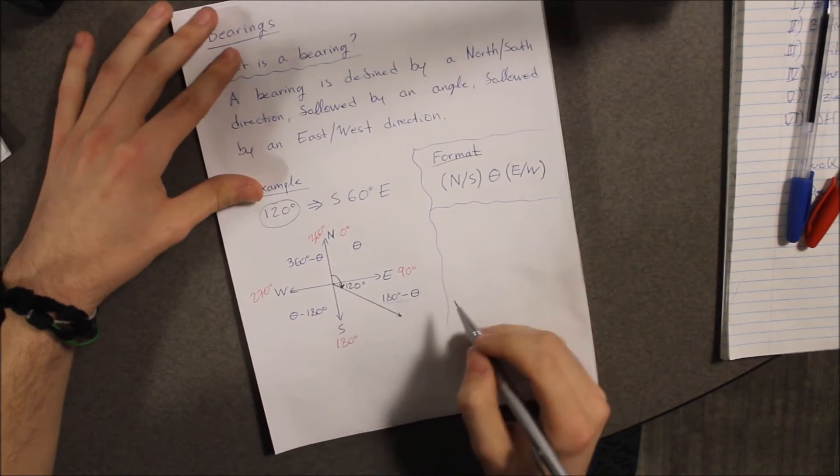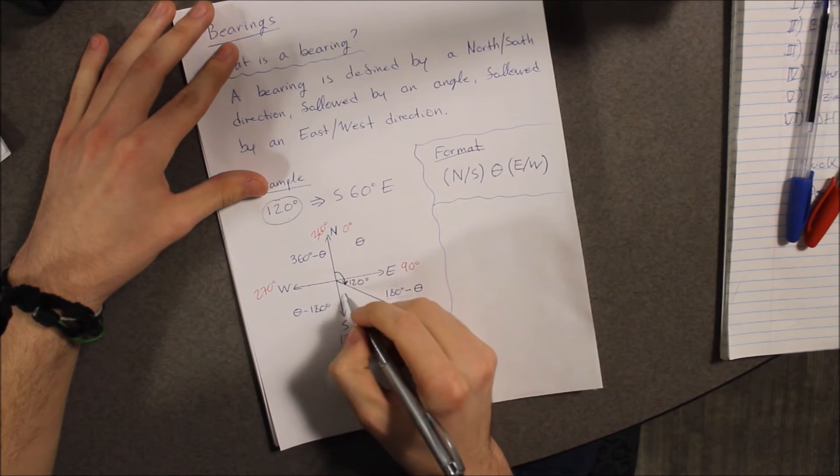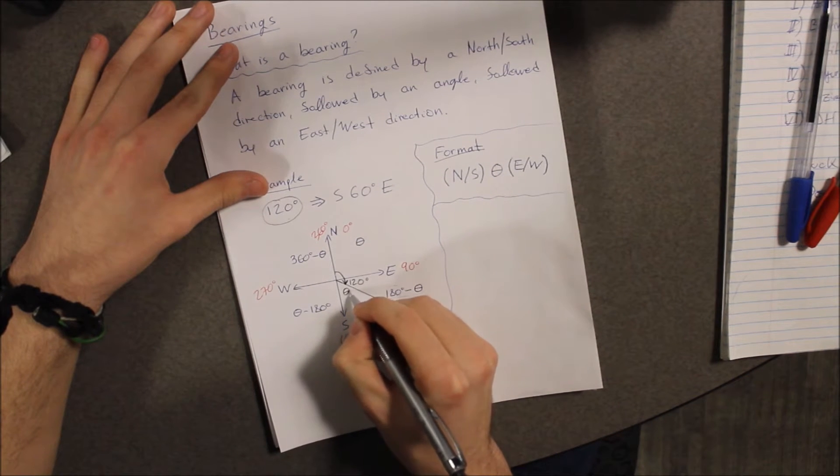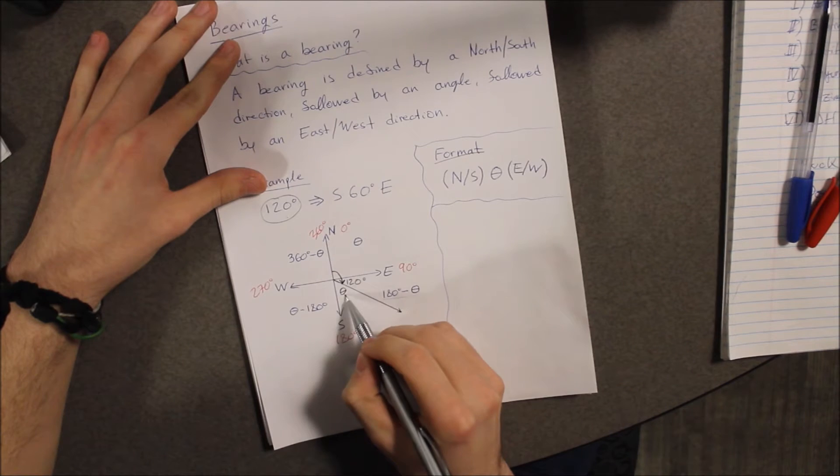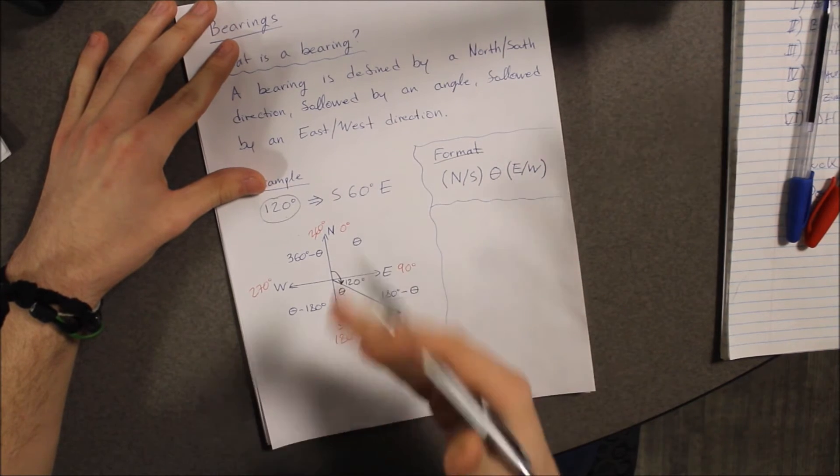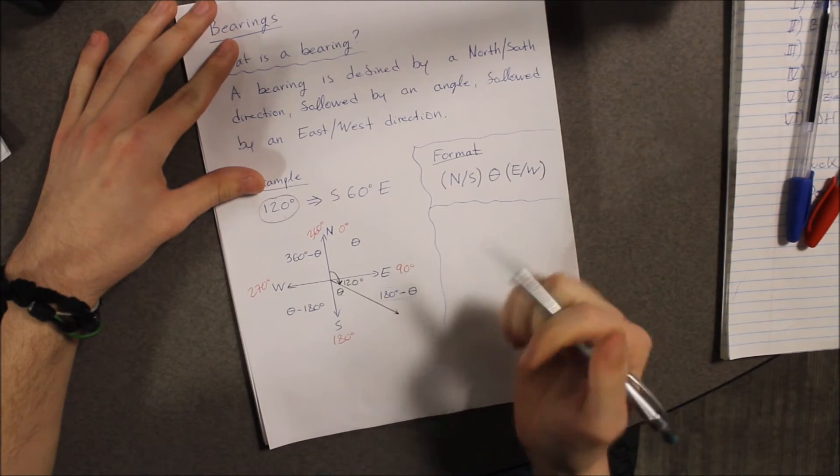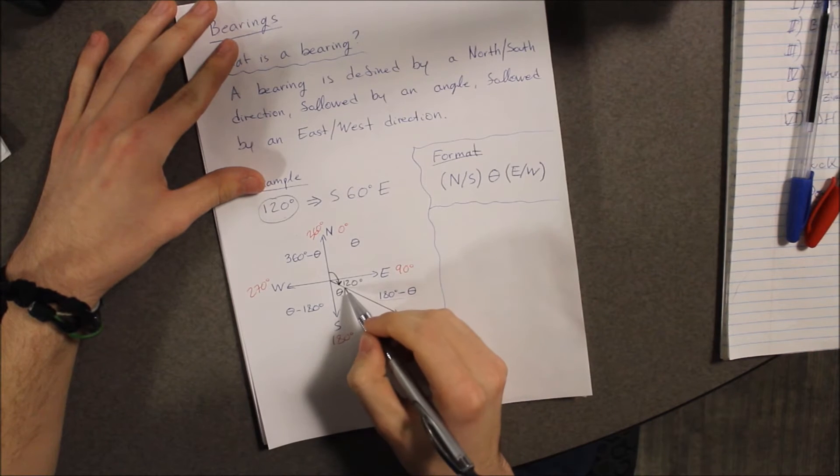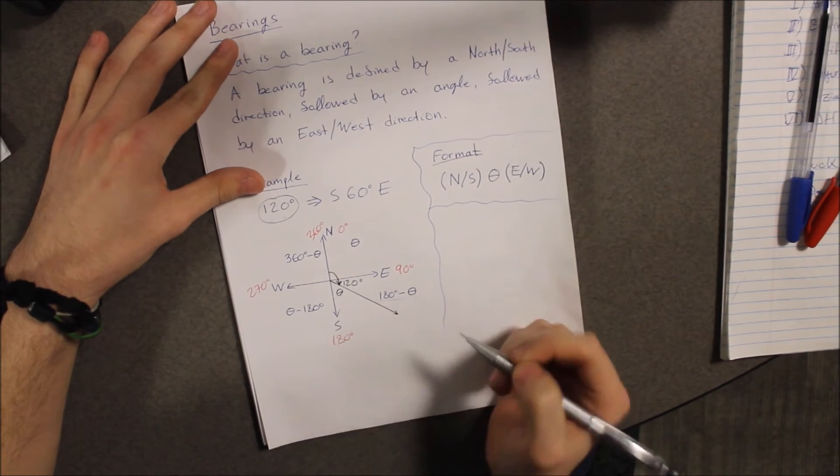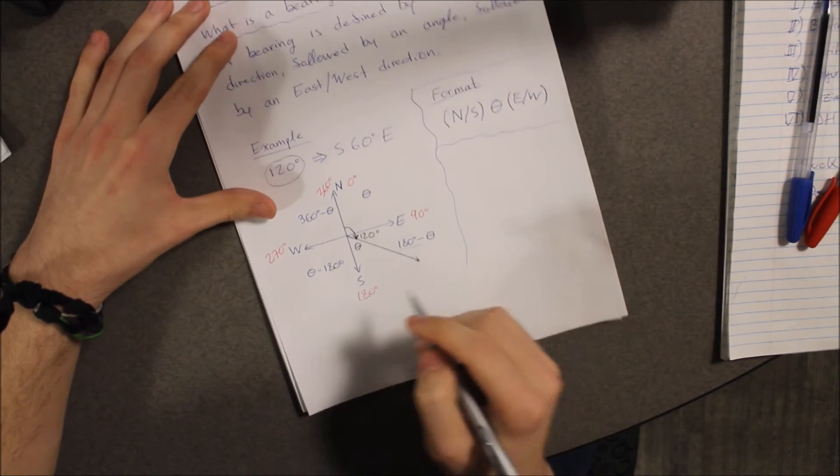So what I'm going to do is show you how to get the bearing. The bearing uses this angle right here. This is the angle that is 60 degrees, and even if you inspect it visually, it makes sense. 120 plus 60 is 180. I will show you how to do that right now.